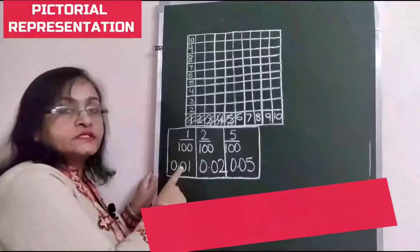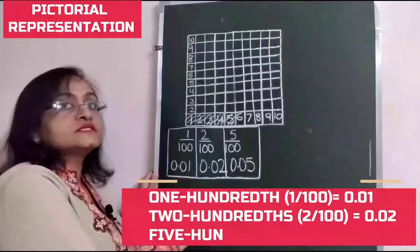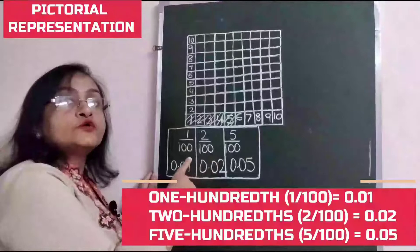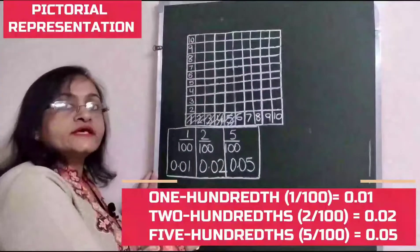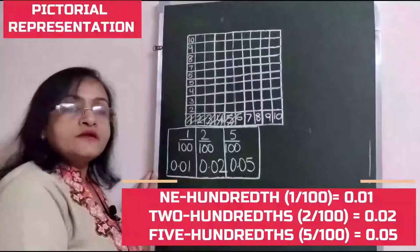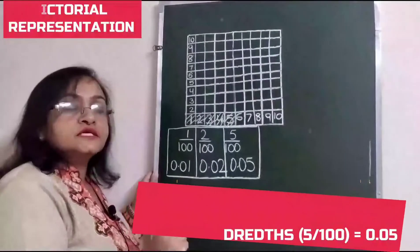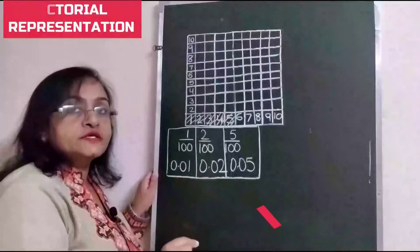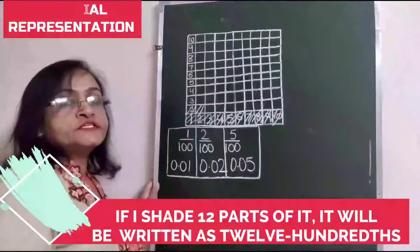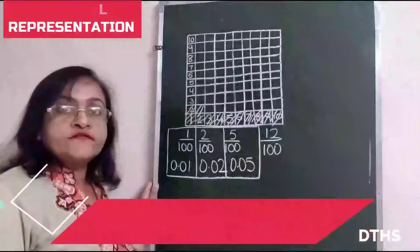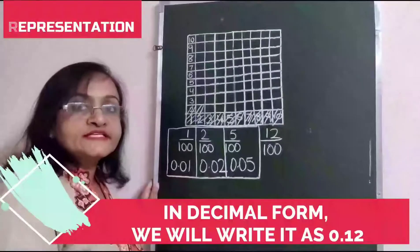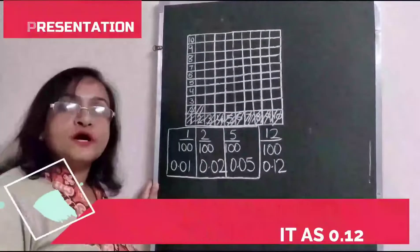So, one hundredth or one by hundred can be written as zero point zero one. Two by hundred or two hundredths can be written as zero point zero two. Five by hundred or five hundredths can be written as zero point zero five. Now, if I shade twelve parts, it will be written as twelve hundredths, and in decimal form we write it as zero point one two.